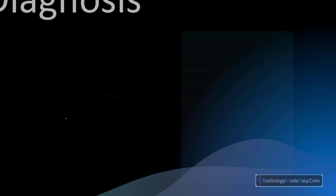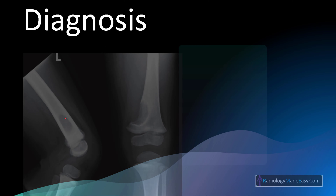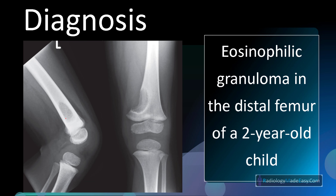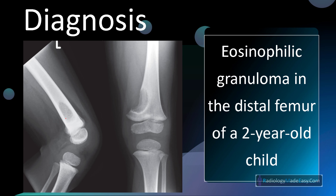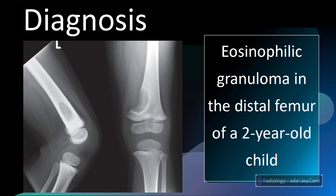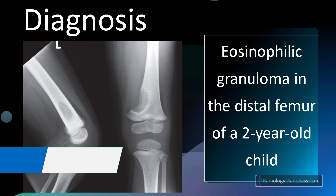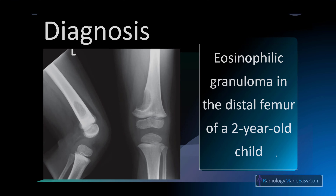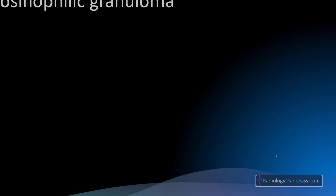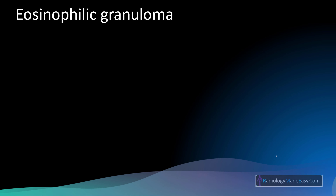The diagnosis here is eosinophilic granuloma in the distal femur of a 2-year-old child. Please remember to present your full, complete diagnosis when you present, as it is very important in your exams. Now let's discuss key points about eosinophilic granuloma.